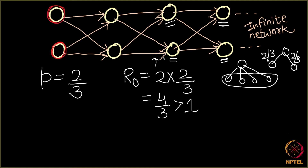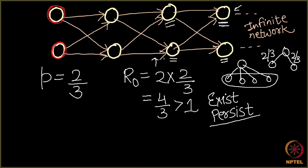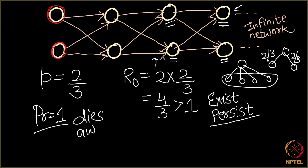Since R0 = 4/3, which is greater than one, there should be a quite high probability that the disease persists in the network. But that is not what happens. Rather, on this network, with probability equal to one, the disease dies away. This means our old theory of the basic reproductive number is not working here for the SIR and SIS models.